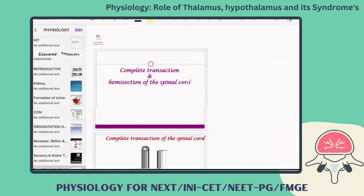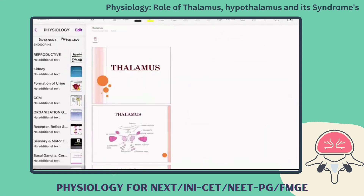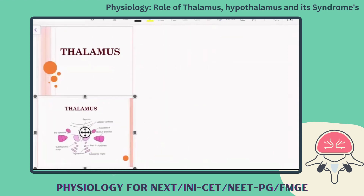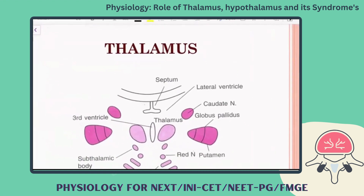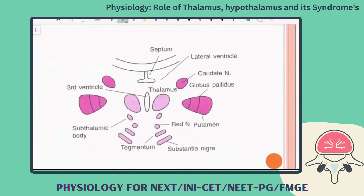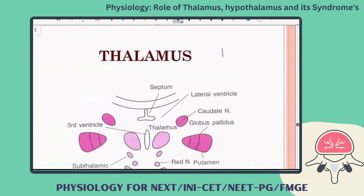The last topic is the thalamus. Like the hypothalamus, it is the last part in this class. The thalamus is an important relay center in the brain — most sensory signals from the periphery reach the cortex through the thalamus.